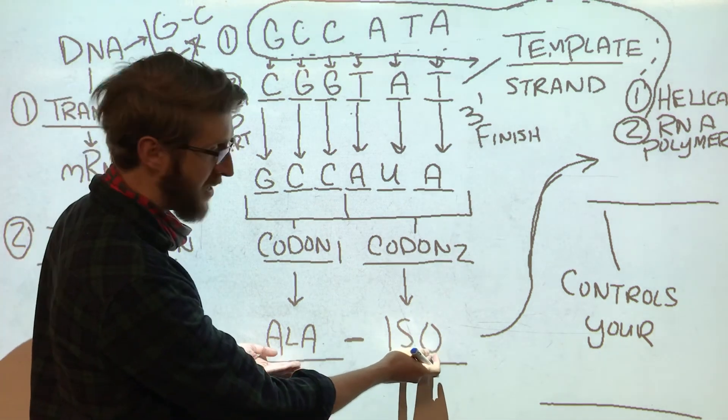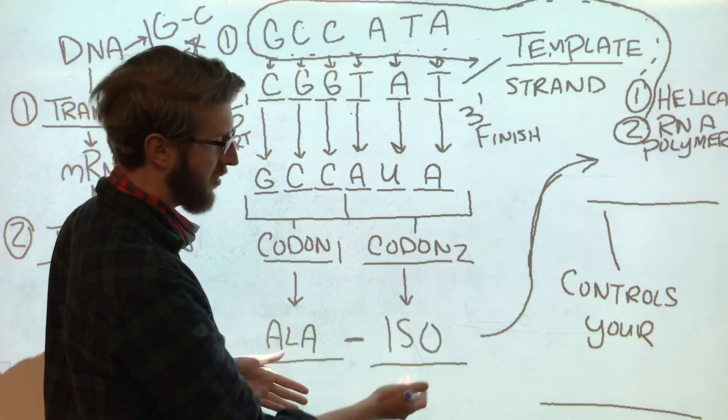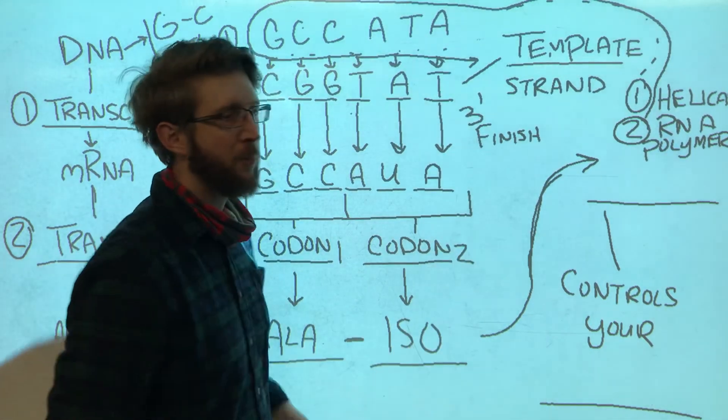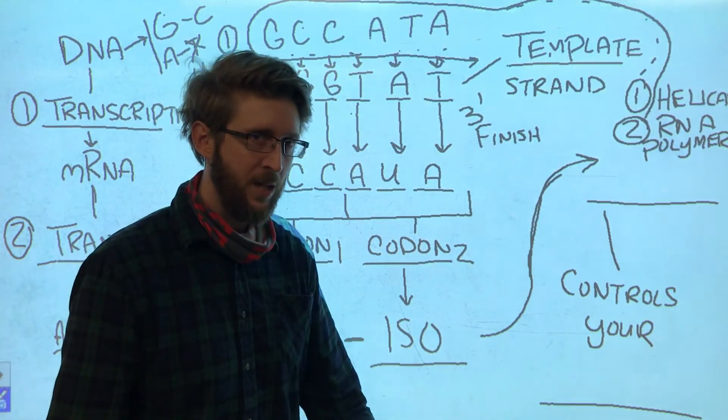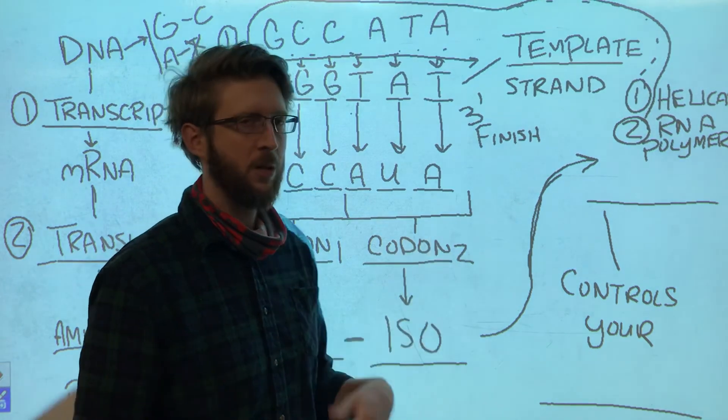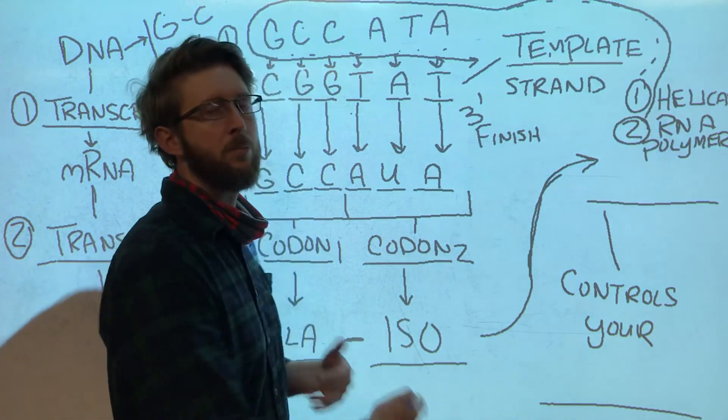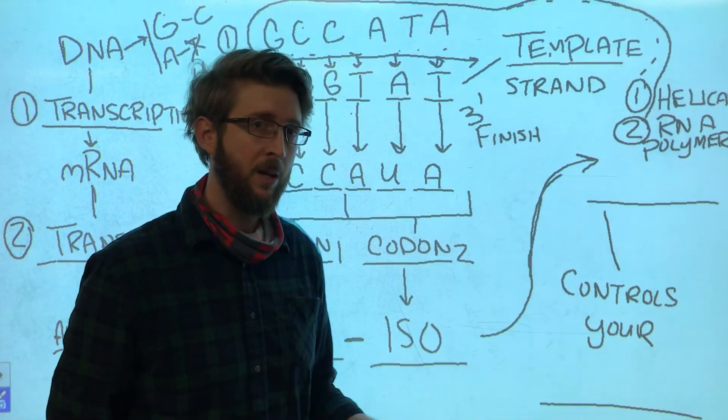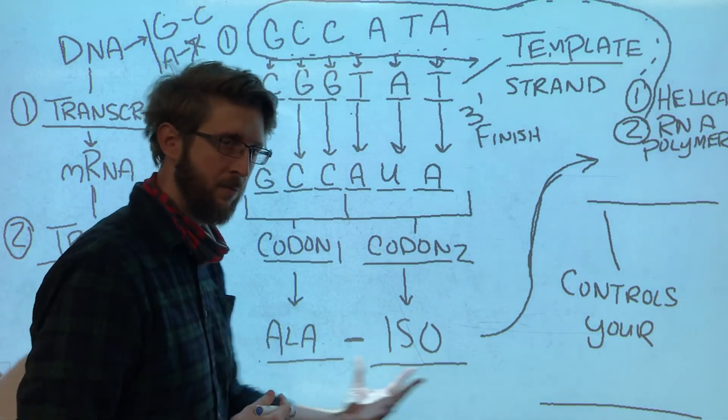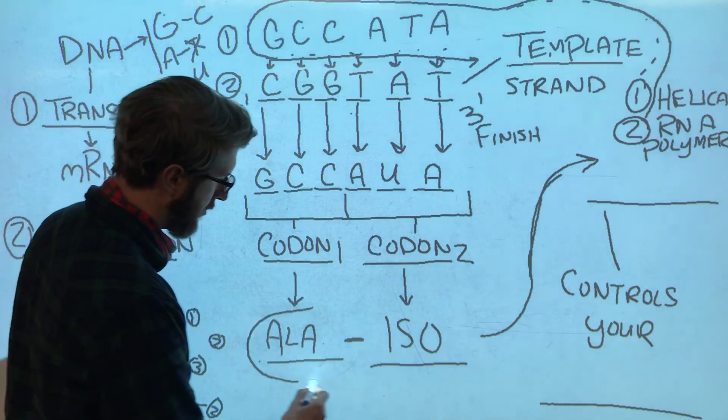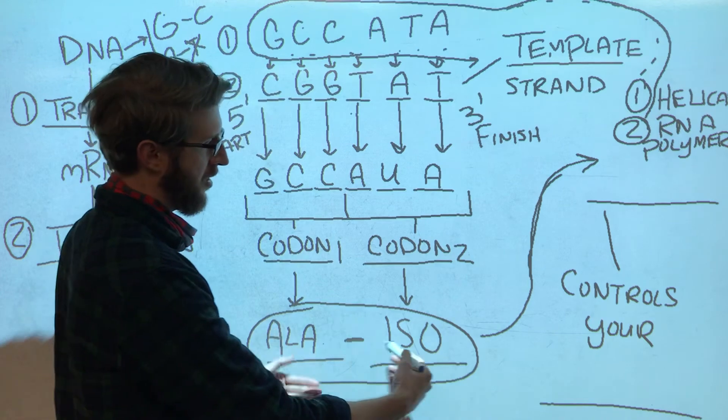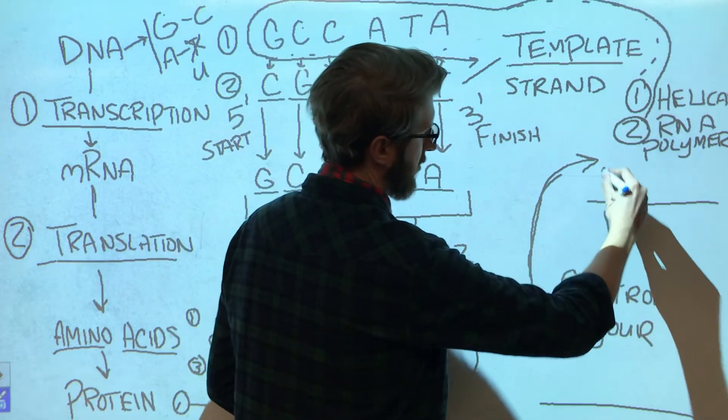Now we have our amino acids. We've reached the end of our RNA sequence. The way that your body knows that it's the end, it'll actually reach what's called a stop codon. But let's just pretend that the next codon is a stop codon and that these are the only two amino acids. So we're going to put these two together. And those two together are now a protein.